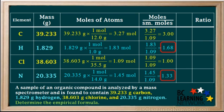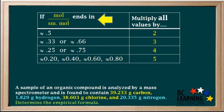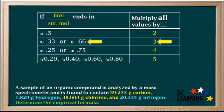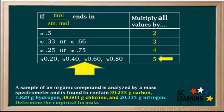Let's see what we need to do to make all these whole. We have a table where we look at the numbers after the decimal point in the values of moles divided by smallest moles. If a value ends near 0.5, multiply all values by 2. If it ends near 0.33 or 0.66, multiply all values by 3. If it ends near 0.25 or 0.75, multiply all values by 4. If it ends near 0.2, 0.4, 0.6, or 0.8, multiply all values by 5.